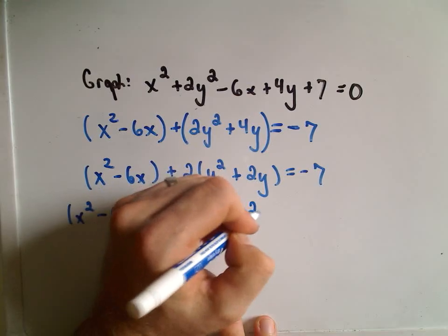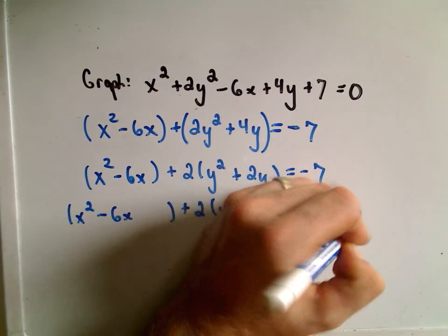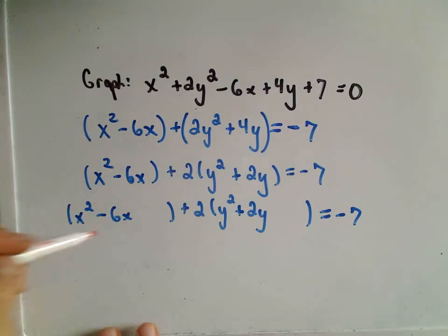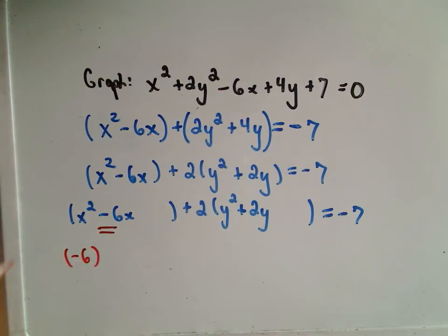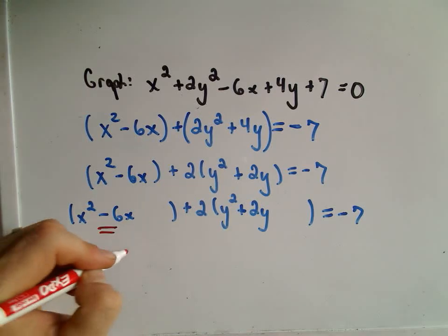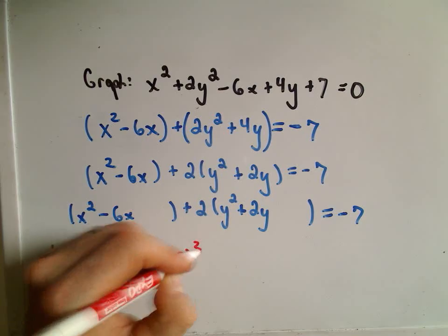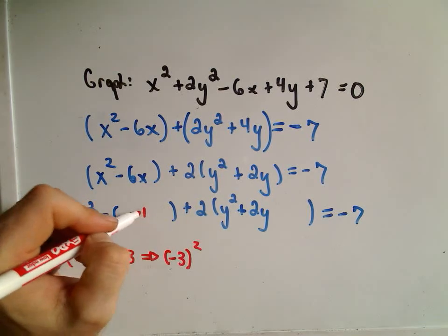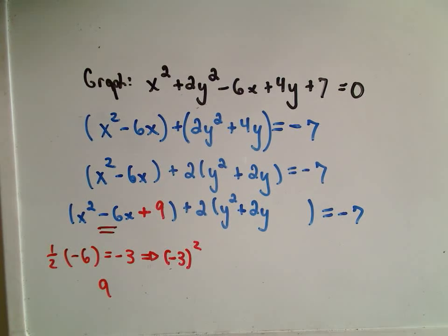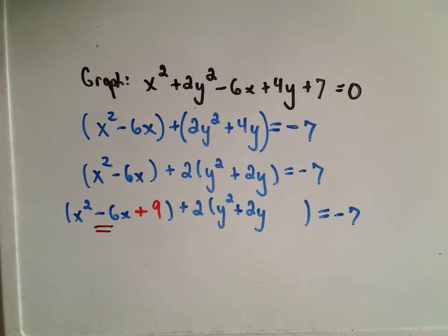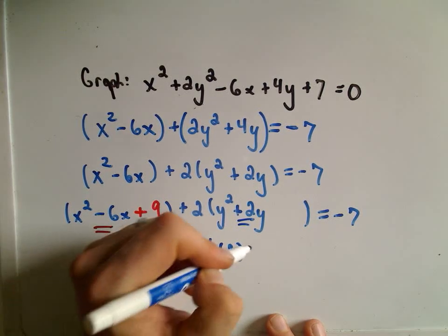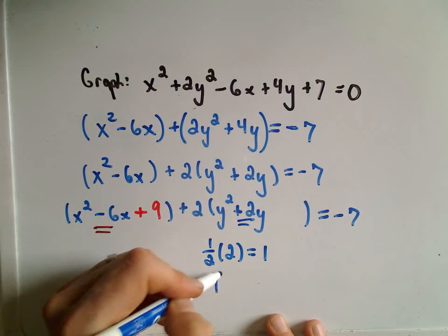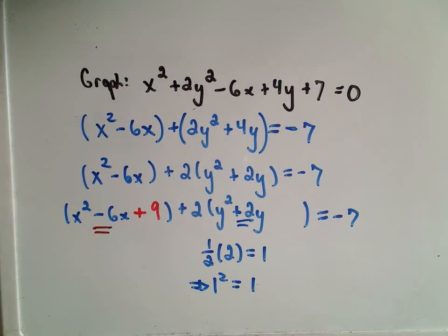This is the tricky step in completing the square. You look at the number in front of x to the first, which is negative 6. Take one half of that — negative 3 — then square it to get positive 9. That's the number you throw inside the first set of parentheses. For the y part, the number in front of y is 2; take one half to get 1, then square it to get 1. So we throw in a positive 1 inside the y parentheses as well.